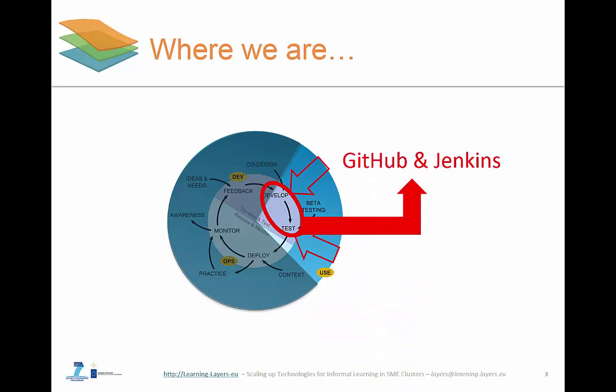We present GitHub, a modern source code repository highly used in open source development, and Jenkins, a leading open source continuous integration server. This webinar assumes previous knowledge about the Git protocol, what GitHub is, and how distributed revision control and source code management can be achieved using GitHub. Likewise, we will not go into details about Jenkins, as we want to focus on the Learning Layers DevOps strategy rather than giving detailed tutorials about the two tools.